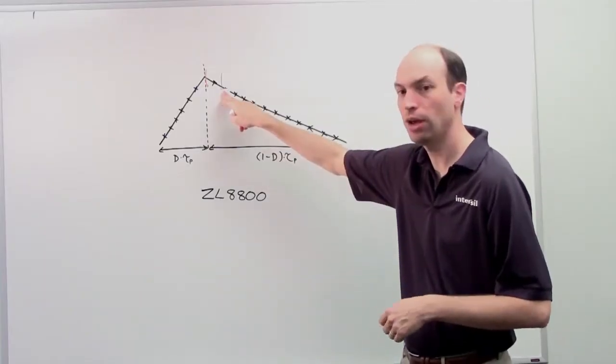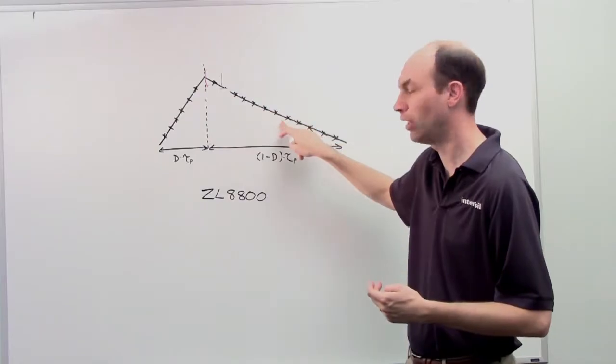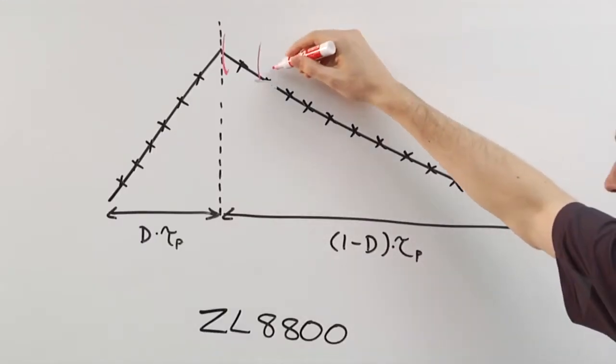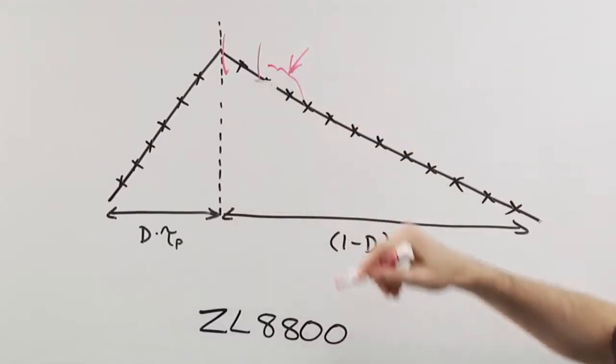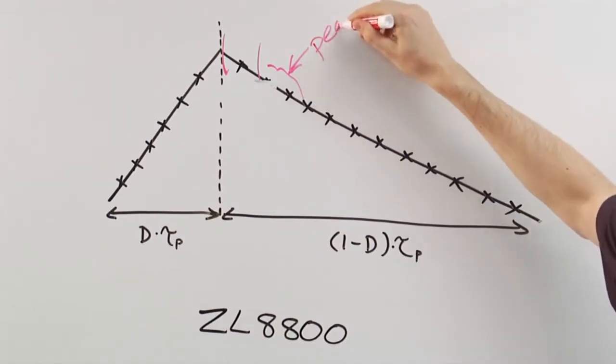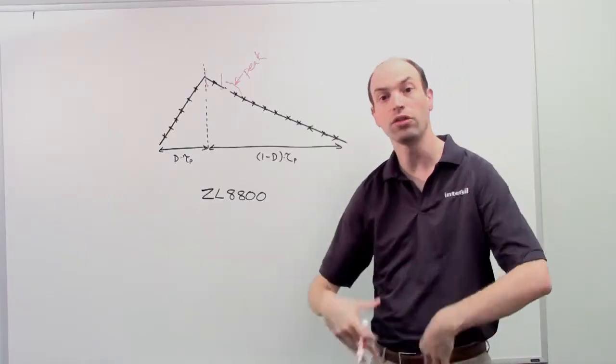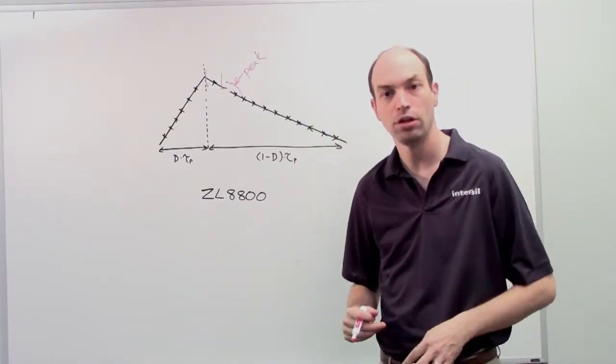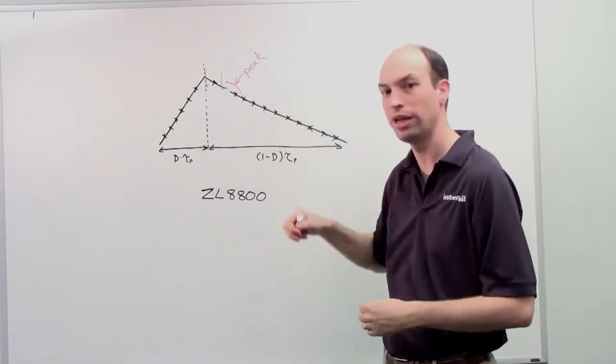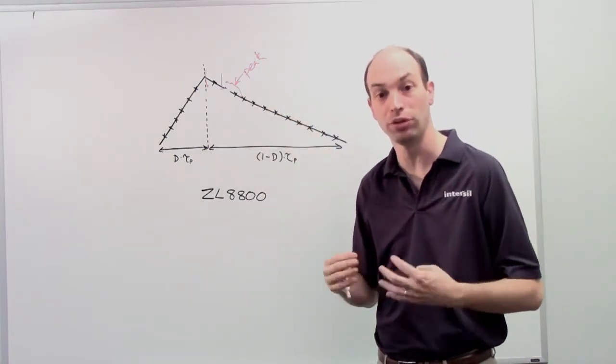Right after the blanking time expires, the device will start sampling continuously. The first few readings are probably what's going to be tripping your peak overcurrent protection. This is a cycle-by-cycle protection. So, every cycle is constantly monitoring it and comparing it to the peak threshold that's set up.